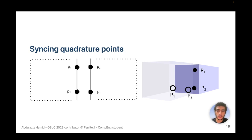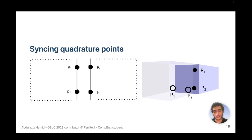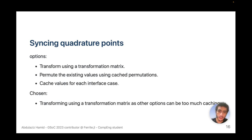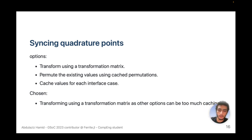For syncing quadrature points there are two cases: in 2D, the interface is a line and can only be flipped; in 3D, the interface is a 2D face which can be flipped or rotated. We had three options for syncing: using a transformation matrix, caching the permutation, or caching all interface values for each possible transformation. We chose to use a transformation matrix generated based on the transformation, because the other two options required too much caching.